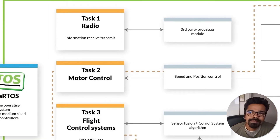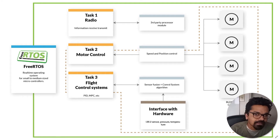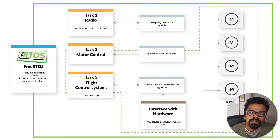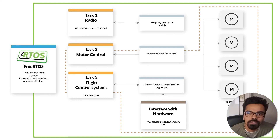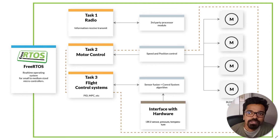In the FreeRTOS world, a task is basically like a thread in a Linux system — it runs in software-parallel with other tasks through constant context switching. It's not hardware parallelism, but tasks still share the same memory, which is how FreeRTOS works. So you can think of each as a separate thread; in FreeRTOS we just call them tasks.